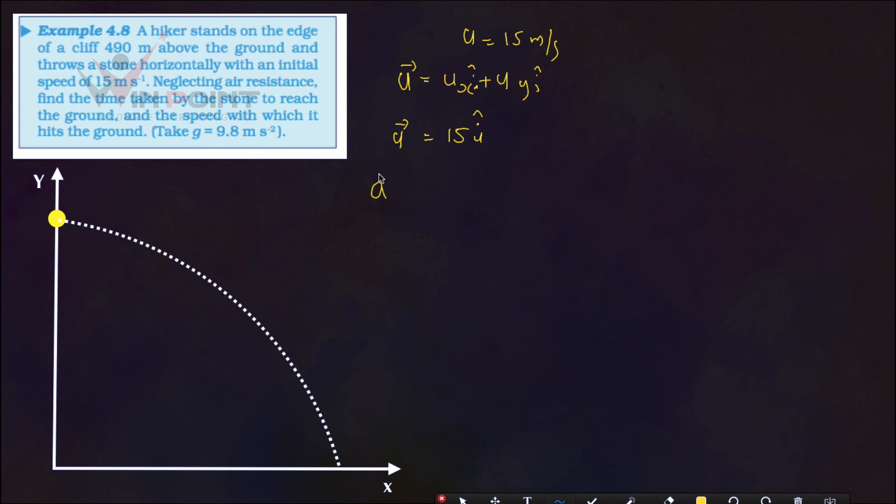And acceleration is given. A equals. Here, we are doing one thing. In this graph, the upward movement I am taking positive. Downward movement, I am taking negative.